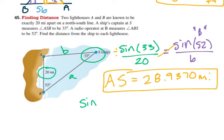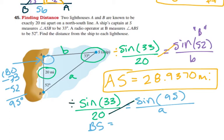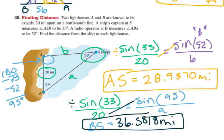And then the ship to lighthouse B is going to be sine of 33 over 20 again. But now equal to sine of, didn't calculate it yet, that angle measure is 180 minus 33 minus 52, so 95 degrees. So sine of 95 over the side we don't know, which is A in this case. So A is from B to S, and so if we cross multiply sine of 95 times 20, and then divide by sine of 33, that gets us 36.5818 miles. That's a very large distance.